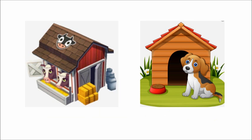Here we can see two different homes for animals. The first one is shed. Cow lives in a shed. The next one is kennel. Dogs have a home called a kennel. You can see the dog is sitting outside the kennel.